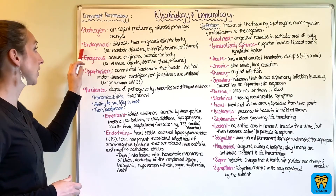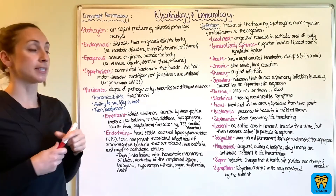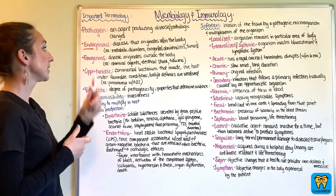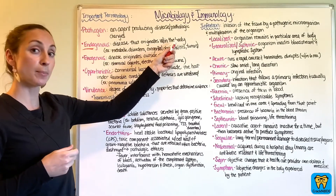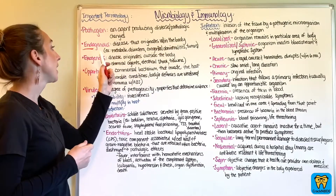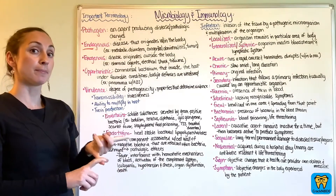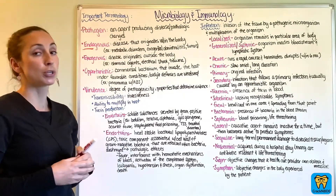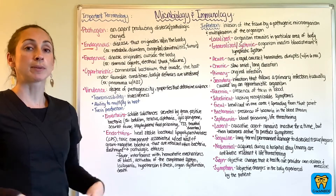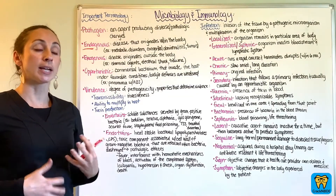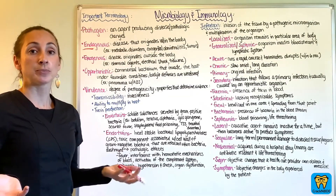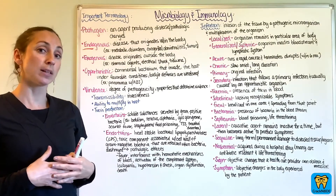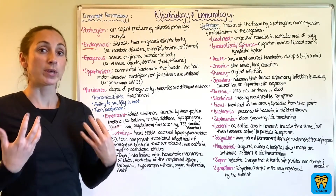Now we have endogenous. Think endo — inside. So endogenous refers to a disease that originates within the body. Examples of this would be metabolic disorders, congenital abnormalities, as well as tumors — something's gone wrong within the body and its normal functions. Autoimmune disorders would be a good example of this as well. So this is going to come from within.